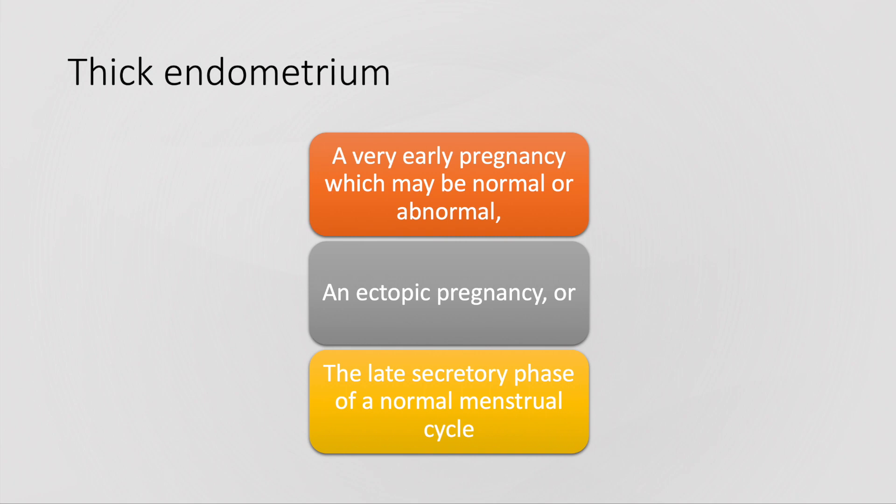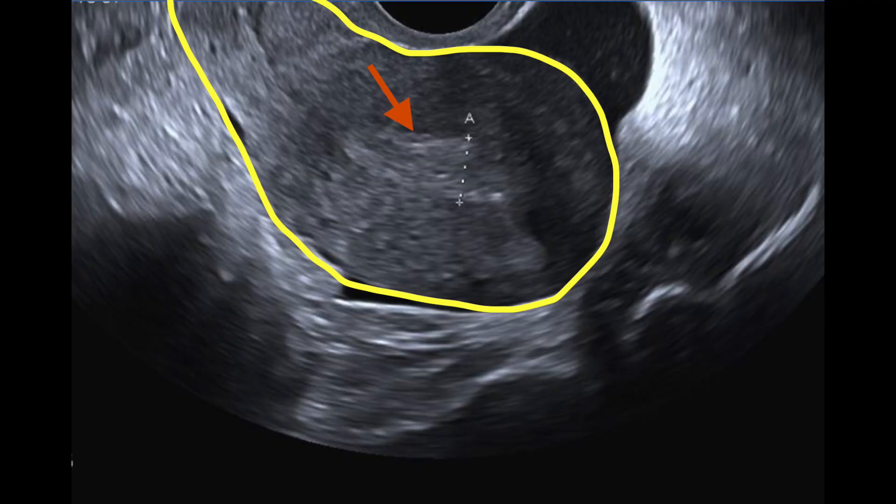A thick endometrium is an early sign of an ectopic pregnancy, which otherwise could also be found in a normal pregnancy and in the secretory phase of a menstrual cycle.